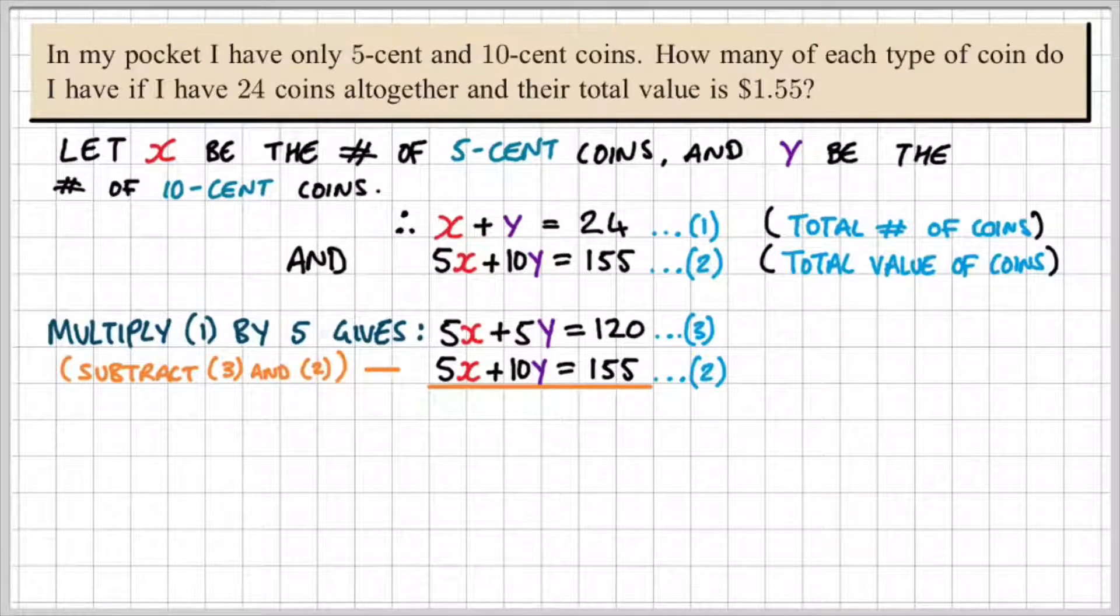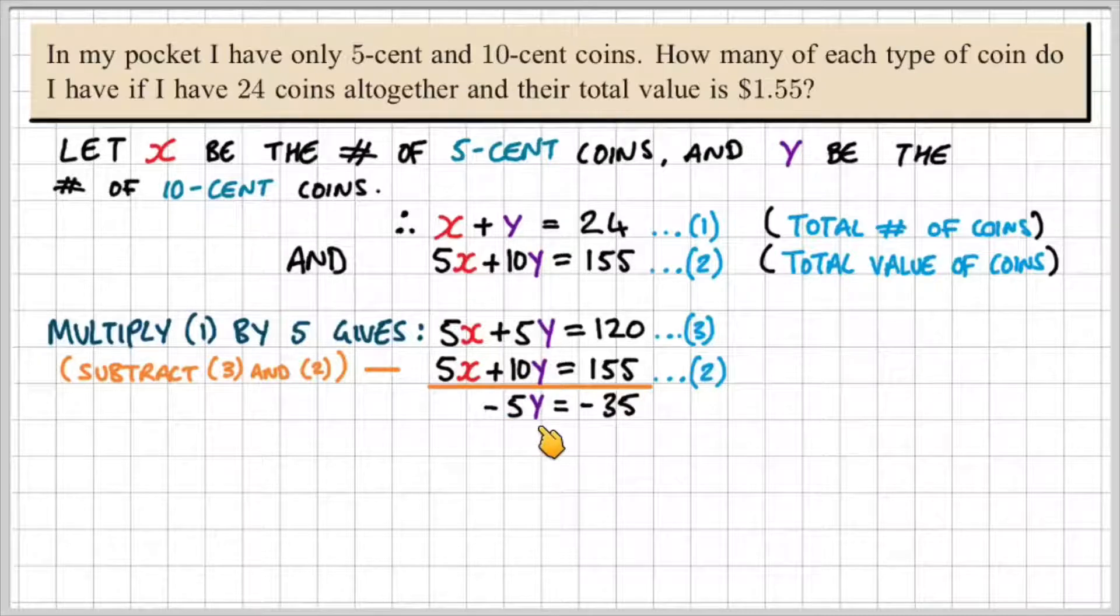So I'm going to subtract equation 3 from equation 2. So 5x minus 5x gives us 0x. 10y minus 5y gives us 5y. 155 minus 120 gives us 35.